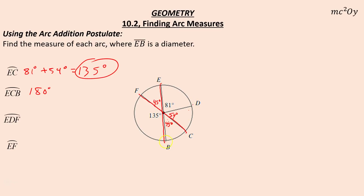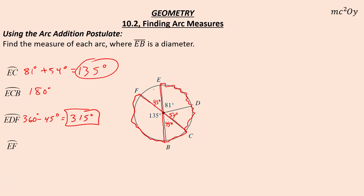Arc EDF — notice it's three letters, so that is a major arc and it's going to be greater than 180. It is everything except that 45 degrees, so one way to do it is 360 minus 45, giving us 315 degrees. And arc EF — the part that's not traced — is 45 degrees.